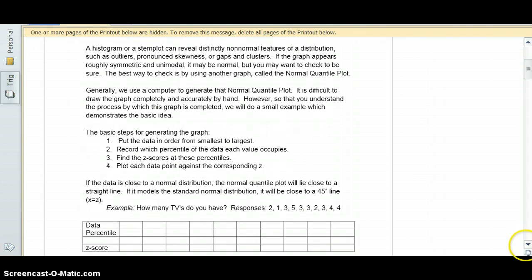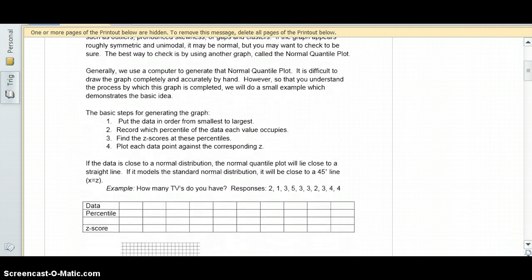If the data is close to a normal model, the normal quantile plot will lie close to a straight line. If it models the standard normal distribution, where the mean is zero and the standard deviation is one, it will be close to a 45-degree line where x equals z.